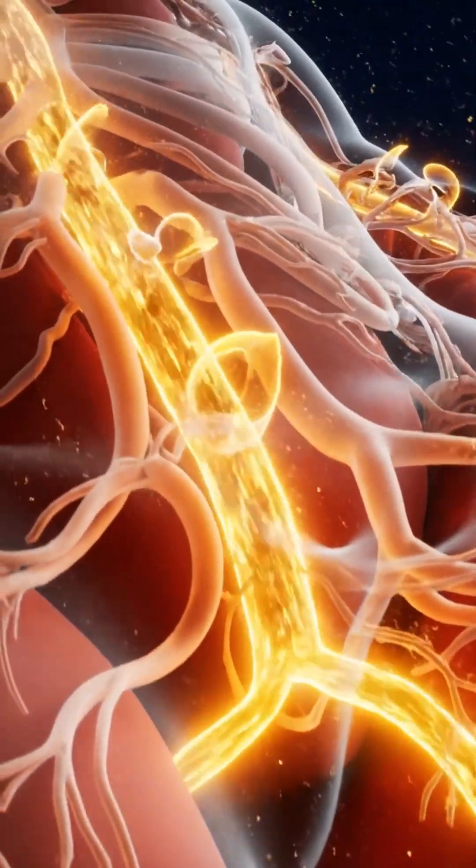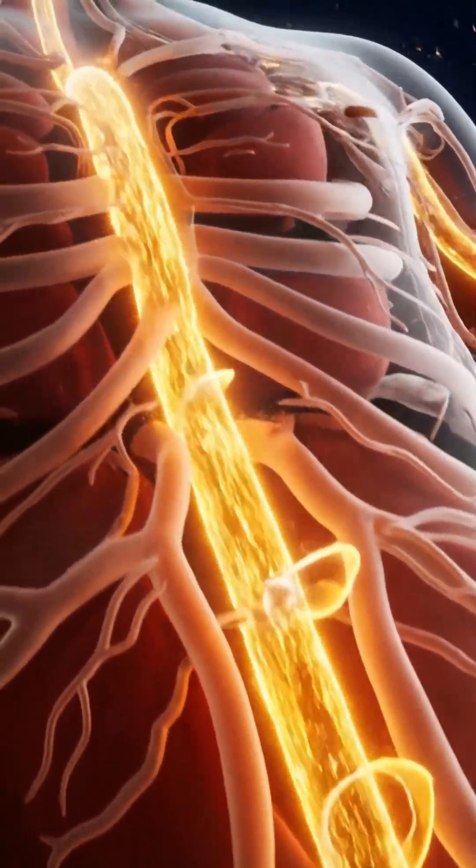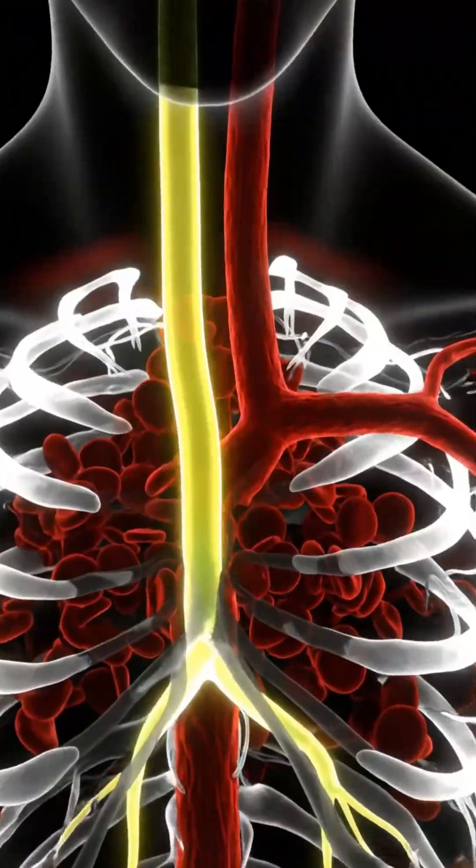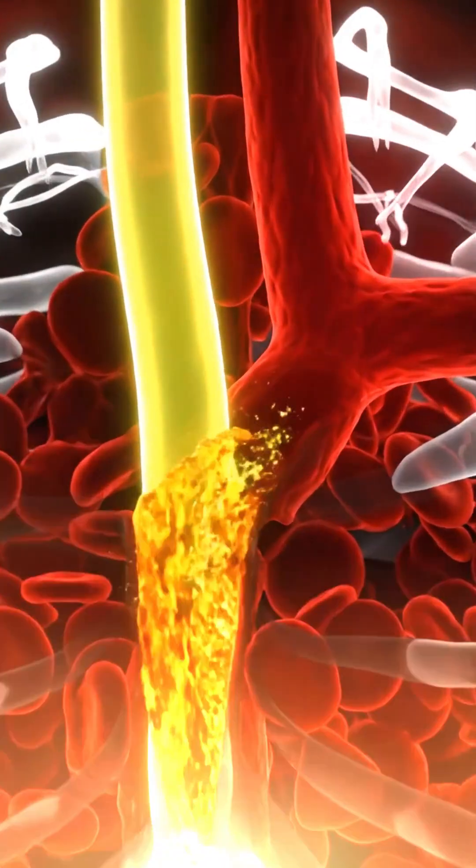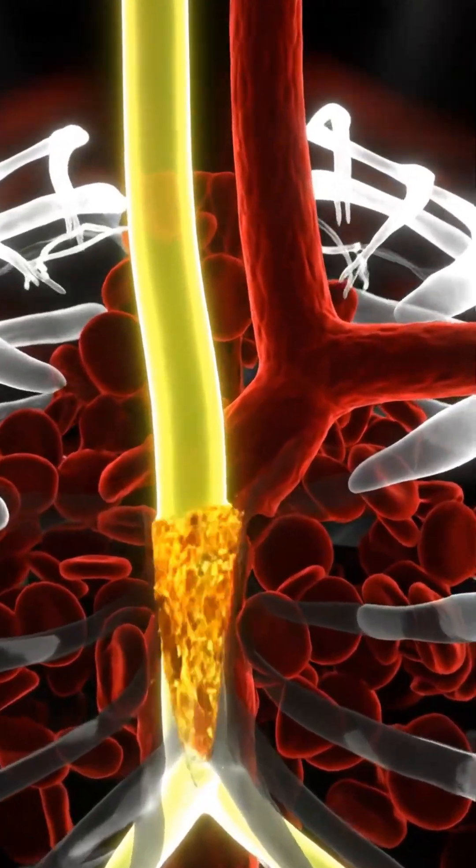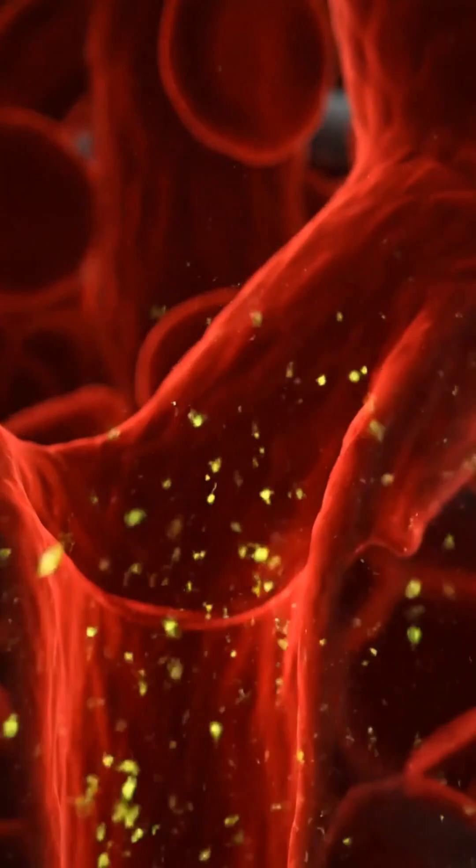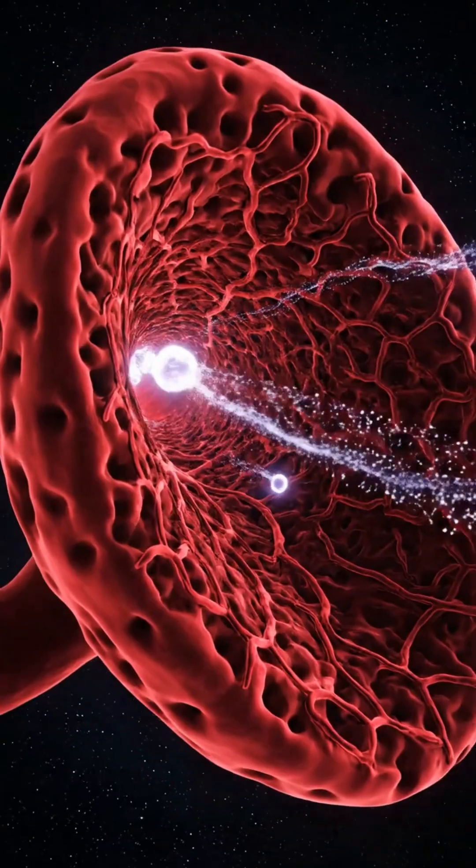Lymph vessels pump relentlessly upward, guided by valves and motion, transporting fluid and immune cells toward central collection points. The thoracic duct funnels cleansed lymph back into the bloodstream at the subclavian vein, reconnecting tissues to systemic circulation.